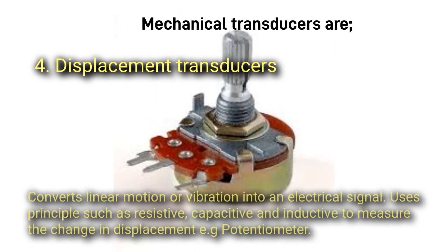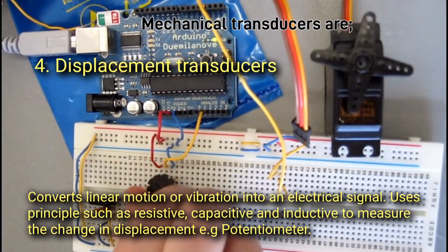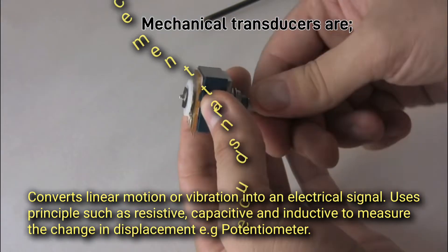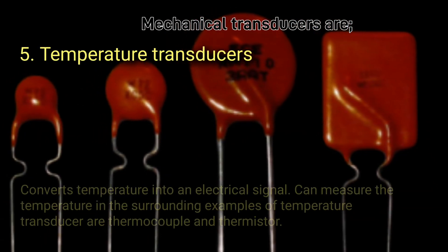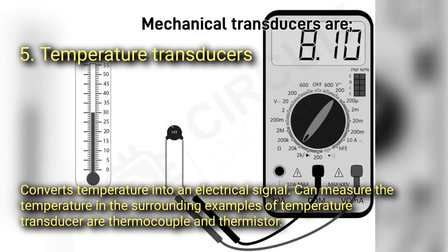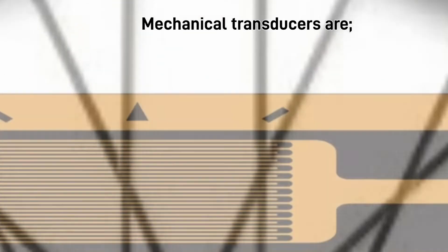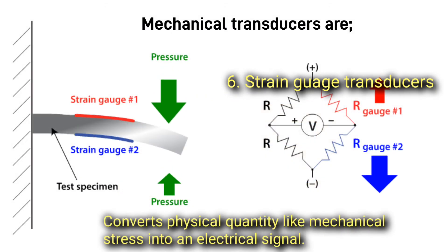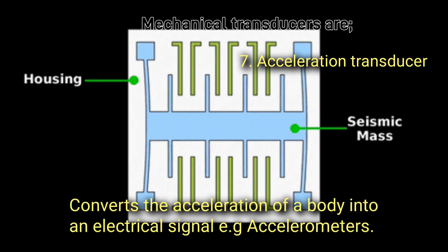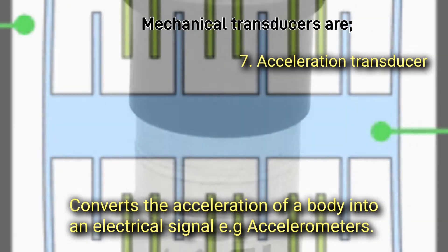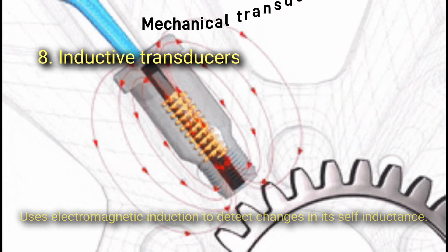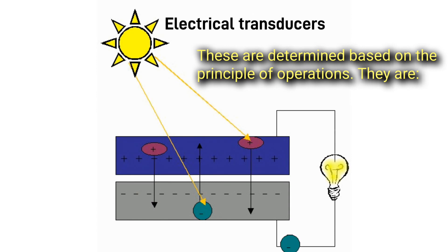Four, displacement transducers — converts linear motion or vibration into an electrical signal, using principles such as resistive, capacitive, or inductive, for example a potentiometer. Five, temperature transducers — converts temperature into an electrical signal; examples include thermocouples and thermistors. Six, strain gauge transducers — converts physical quantities like mechanical stress into an electrical signal. Seven, acceleration transducers — converts the acceleration of a body into an electrical signal, for example accelerometers using inductive electromagnetic induction.